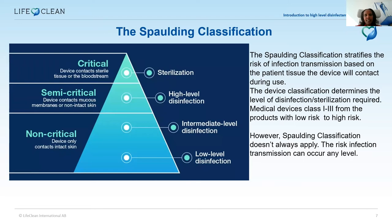I want to emphasize that the Spaulding classification does not apply in all situations. The risk of infection transmission can occur at any level. For example, on surfaces at the intermediate or low level, Clostridium difficile can be present, which may require a high-level disinfectant. What microorganism is present is the most critical factor to keep in mind, even when you are using the appropriate sterilization or high-level disinfectant for critical and semi-critical items.